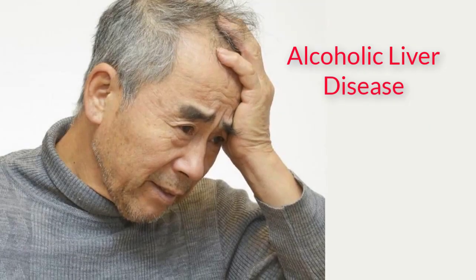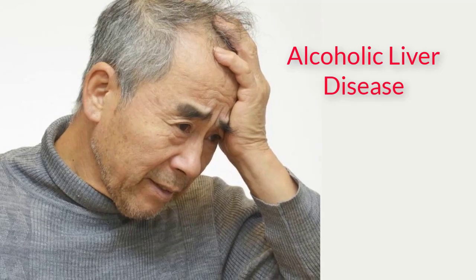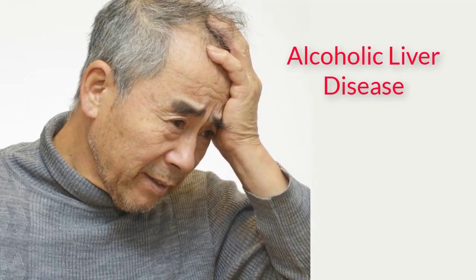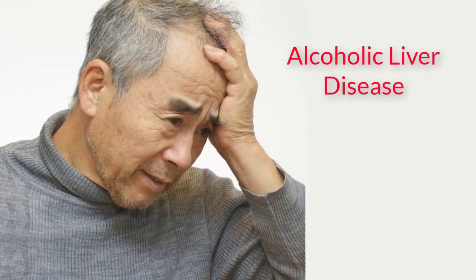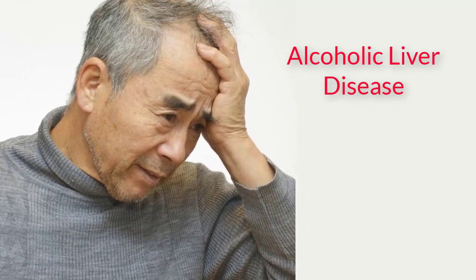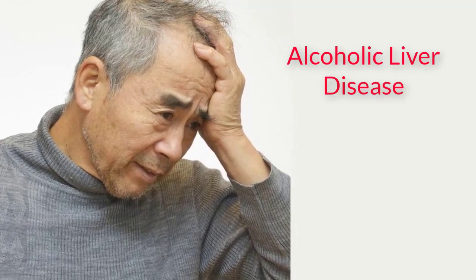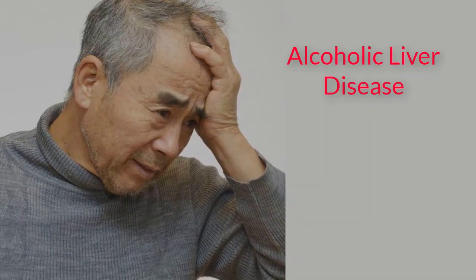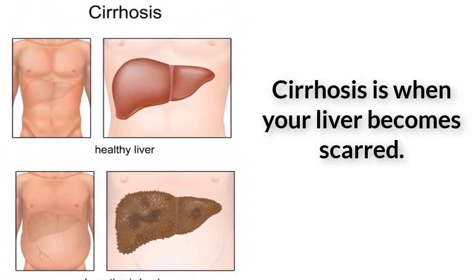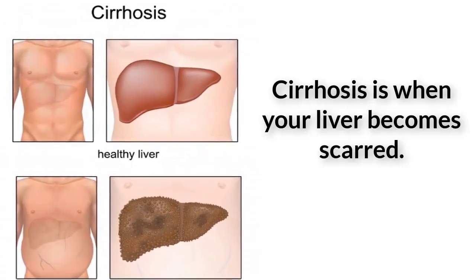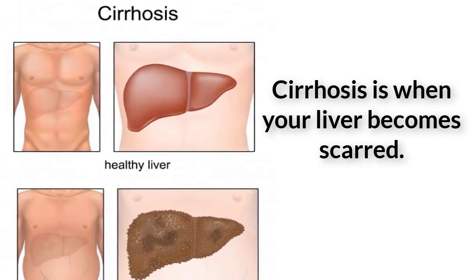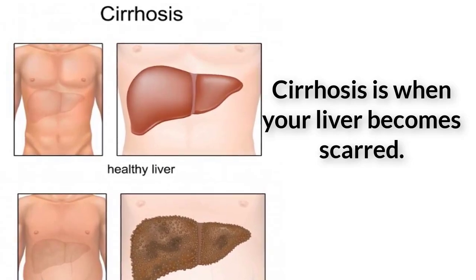Alcoholic liver disease. Fatty liver disease is a common consequence when you consume excess alcohol. It is one of the earlier consequences of chronic alcohol consumption but can develop into more severe liver conditions, such as alcohol-induced liver cirrhosis. Cirrhosis is when your liver becomes scarred, which makes it hard for your liver to function optimally, so poor liver function is a common result. Cessation of drinking helps to improve alcoholic fatty liver disease.